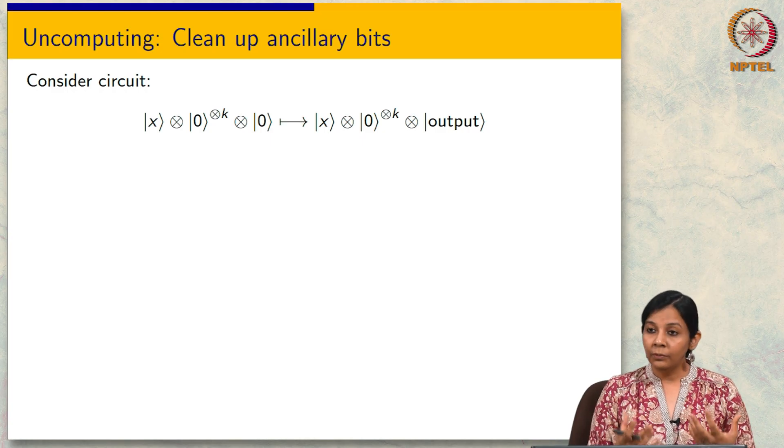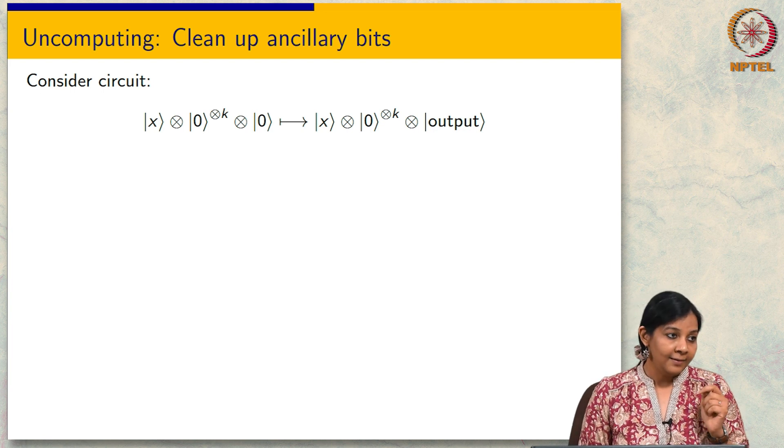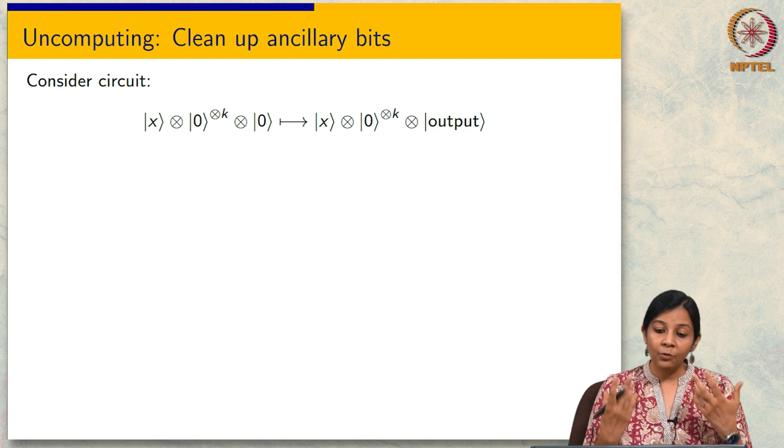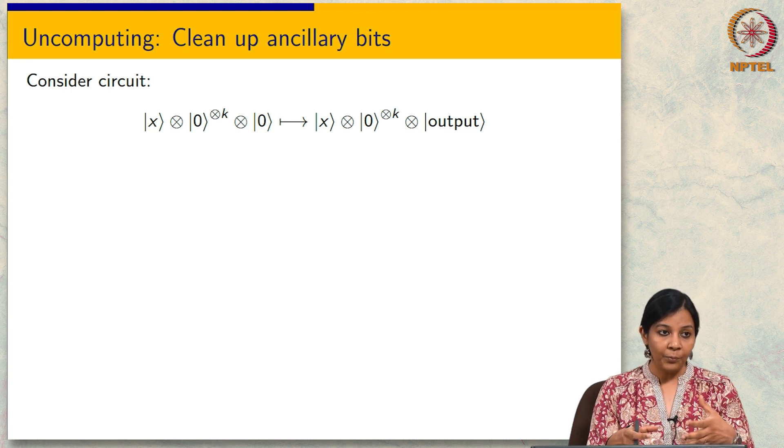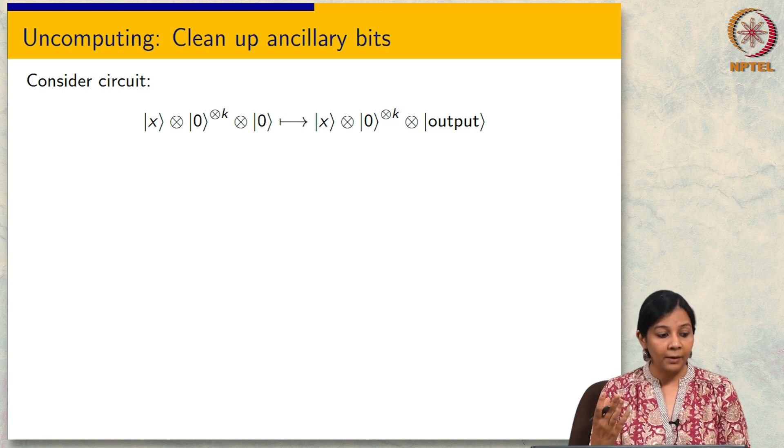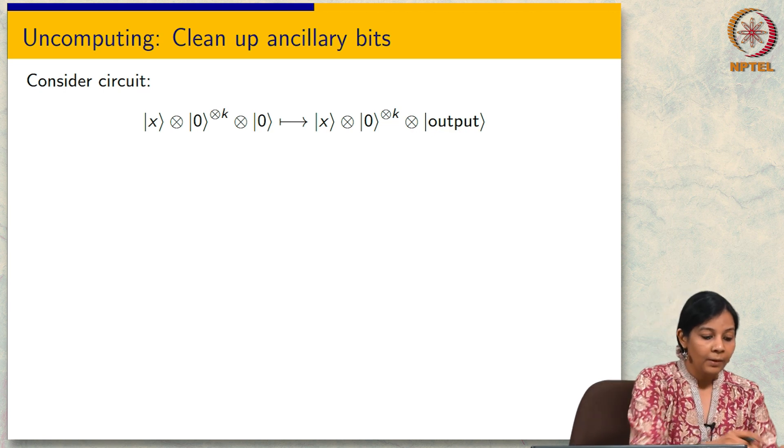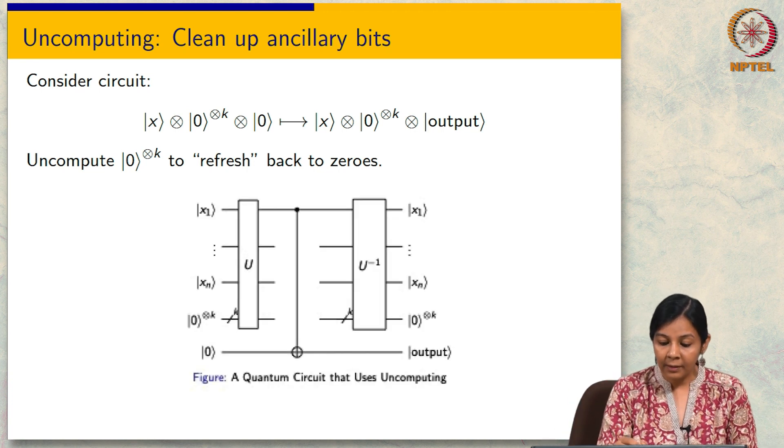Now, that we know how to do reversible computation, one nice thing that it lets us do is this notion of uncomputing. In particular when we do our computation we might be using some extra bits which we call ancillary bits. So, let us look at this picture here.